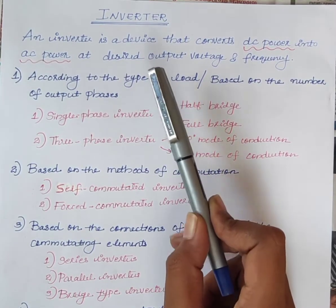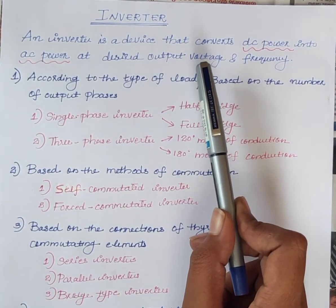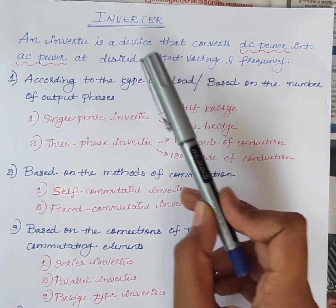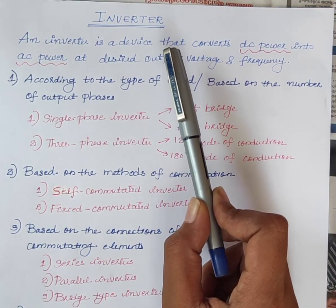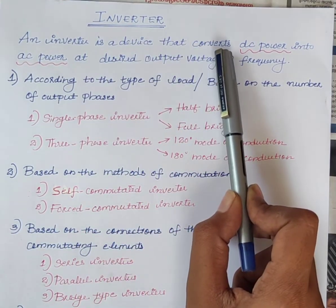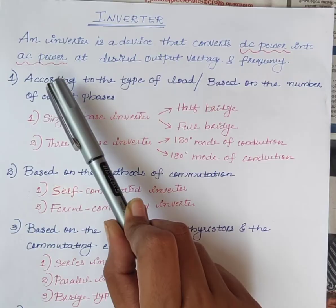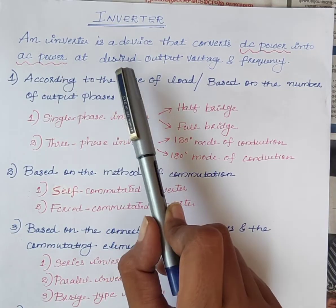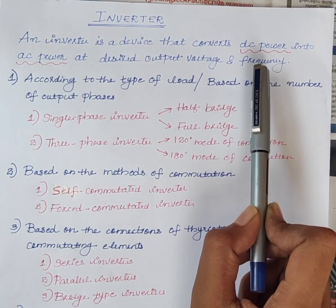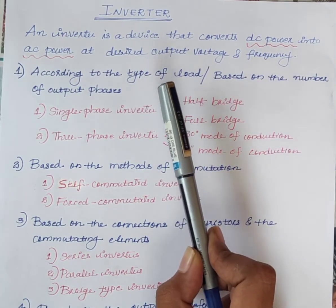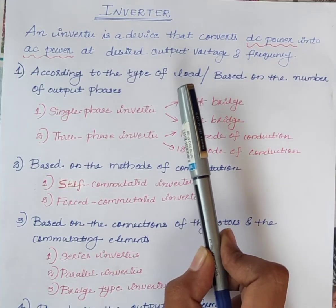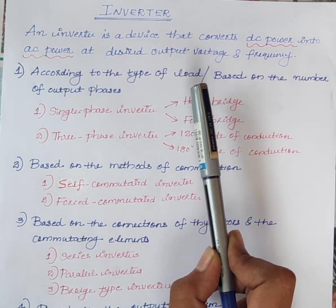Hello students, today we will try to understand different types of inverters. An inverter is a device that converts DC power into AC power at desired output voltage and frequency. Inverter circuits can be classified into many groups based on different criteria.